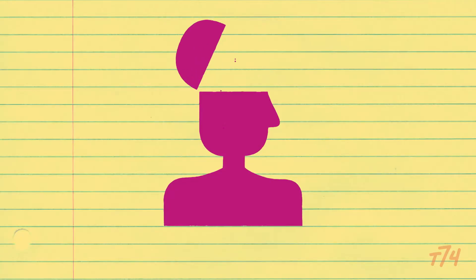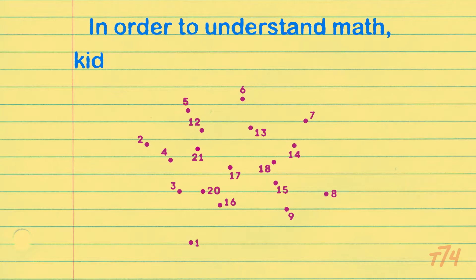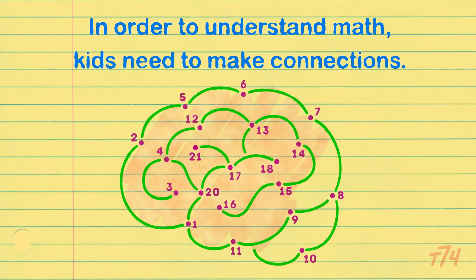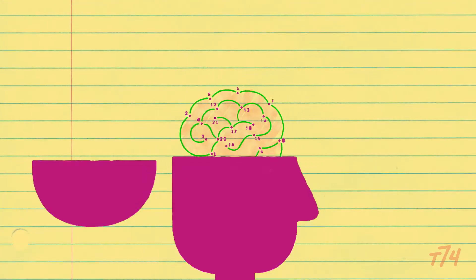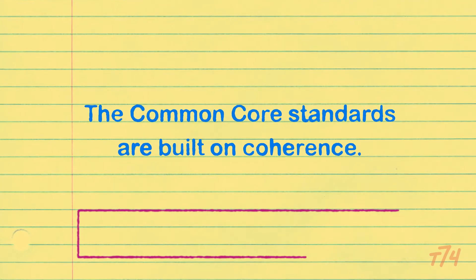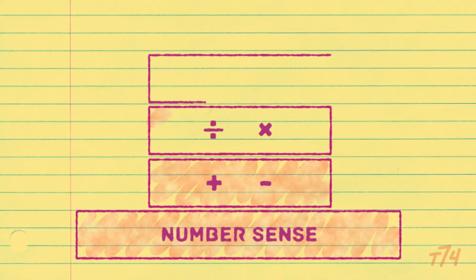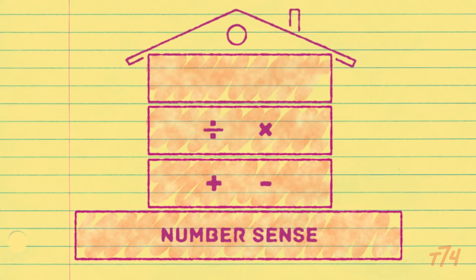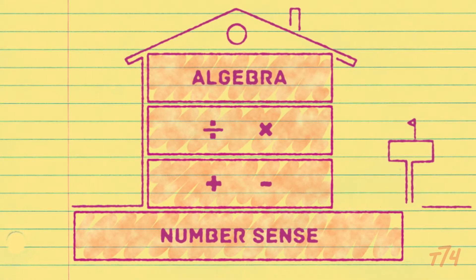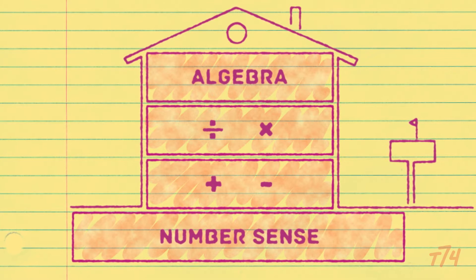Brain research tells us that in order for kids to understand math, they need to make connections. So the Common Core State Standards were built on coherence — just like if we're building a house, we want the concrete to be there, we want to make sure it's a strong foundation, and we want to make sure that we're connecting that strong foundation to the rest of the house.